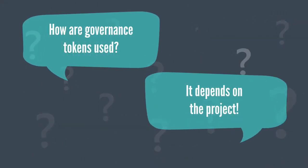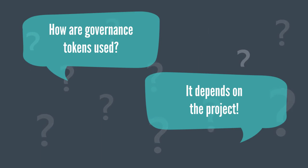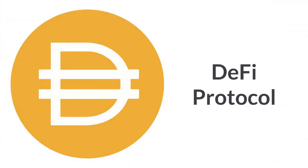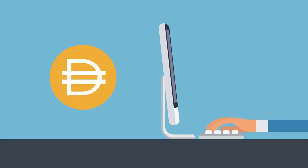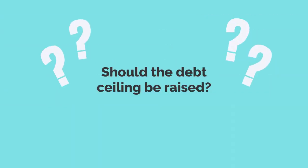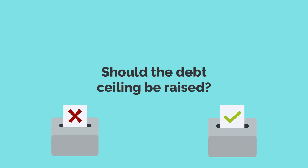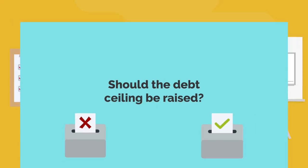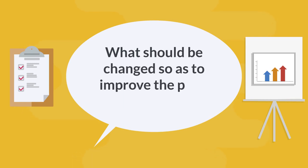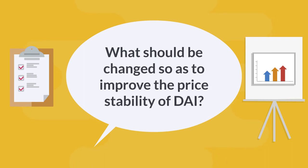How governance tokens are used varies on a project-to-project basis. For example, DAI is a stablecoin that runs on a DeFi protocol which can be altered based on decisions users make through the Maker governance token. The issue of whether or not the debt ceiling should be raised can and is voted on. The same way, users decide if one rule change or another should be deployed in the spirit of maintaining or improving the stability of the price.